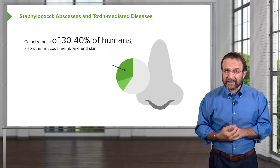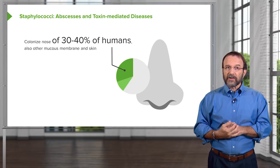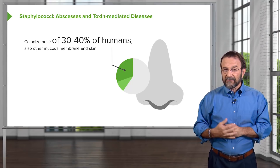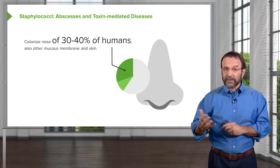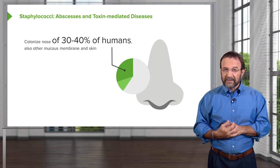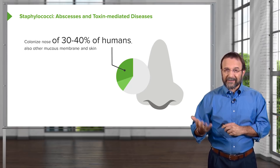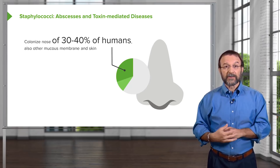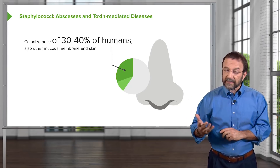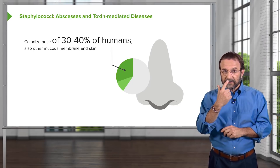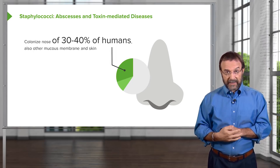Staphylococci colonize the nose, other mucous membranes, and the skin of 30 to 40% of humans. So 30 to 40% of people are carrying these bacteria as part of their normal flora — in your nose, mucous membranes, even on your skin.